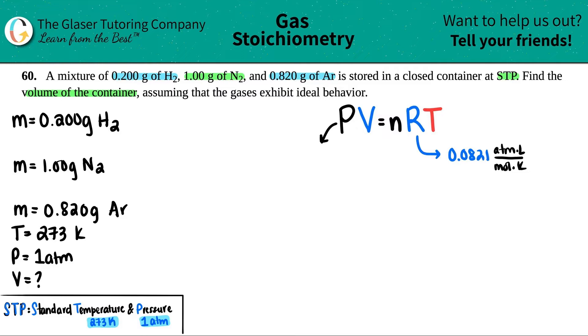So the pressure then has to be in atm, and it is - they gave it to us. At STP, the pressure is always 1 atm. The volume is what we're solving for, and just know that when we bring it out of this formula it has to be in liters. N is the number of moles.